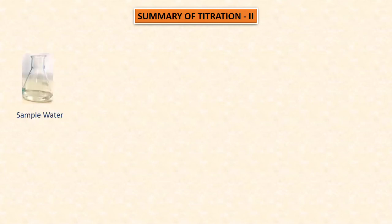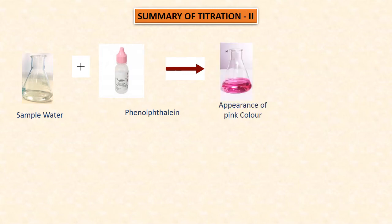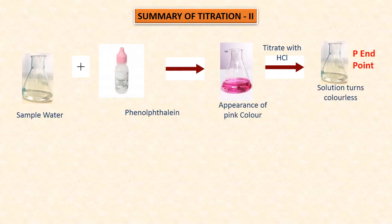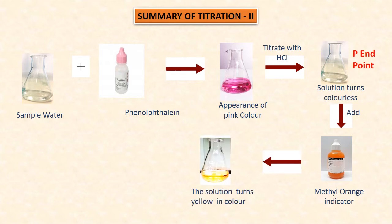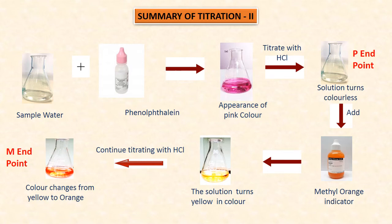Summary of titration two: we took sample water and added phenolphthalein indicator — color changed to pink. Upon titrating with HCl, it turned colorless — that is the phenolphthalein endpoint P. Then we added methyl orange indicator to the same conical flask — colorless solution turned yellow. Upon further titrating with HCl, we get orange color — that is the methyl orange (total alkalinity) endpoint M.